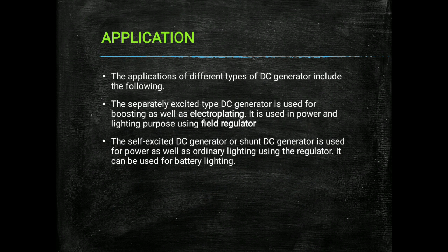The self-excited DC generator or shunt DC generator is used for power as well as ordinary lighting using a regulator. It is used for regulated supply voltage and for power supply, and can also be used for battery lighting.